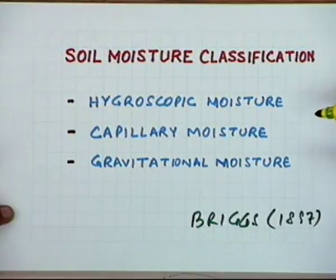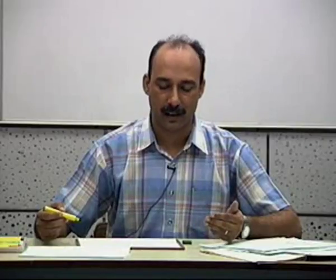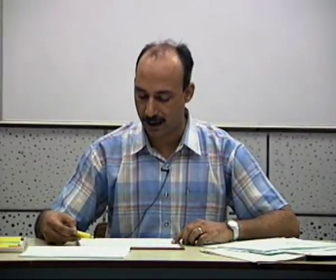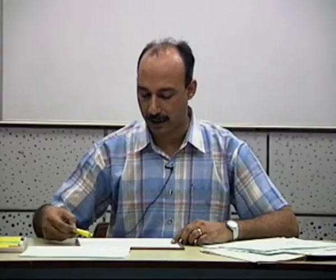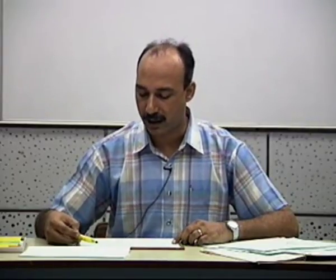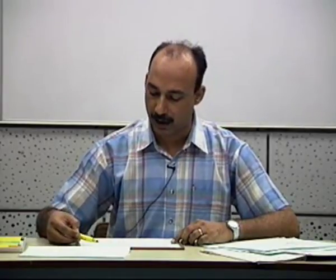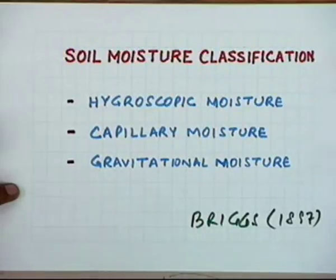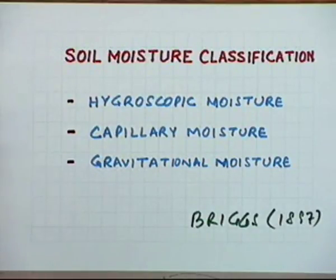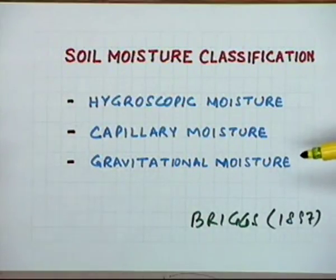This classification has been improved upon by many other researchers. They have gone in for different subclassifications of the moisture retained in the soil. But for all practical purposes, these three classes of moisture availability are the general classification. Let's try to look at these classes one by one.